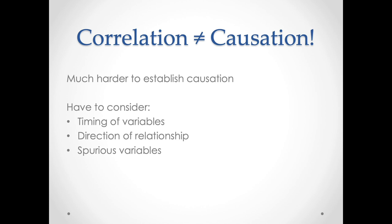An example of this is education and earnings. There's a relationship or a correlation between education and earnings — people who have higher degrees of education also have higher earnings. This correlation can partially be turned into a potential cause because we know that people's education happens before their earnings: people go to school and then they get jobs. The timing or sequencing of the variables allows us to begin to suggest a causal directionality to this phenomenon.